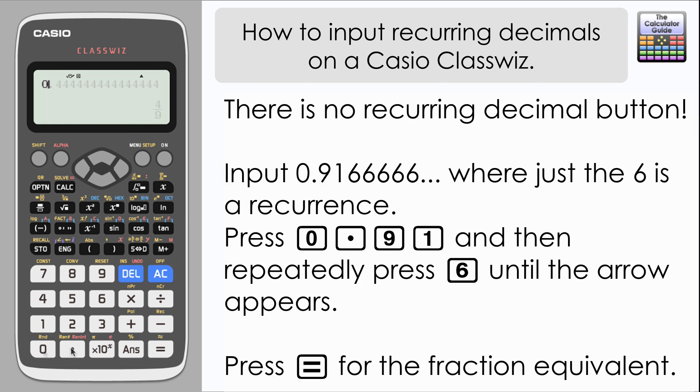Let's try an example where the recurrence doesn't start at the beginning: 0.916666... where just the 6 is recurring. The recurrence is in the sixes after the first decimal place of 9 and the second decimal place of 1. That will recognize the fraction 11/12. However, if I press SD, it gives a rounded decimal rather than showing it as recurring.